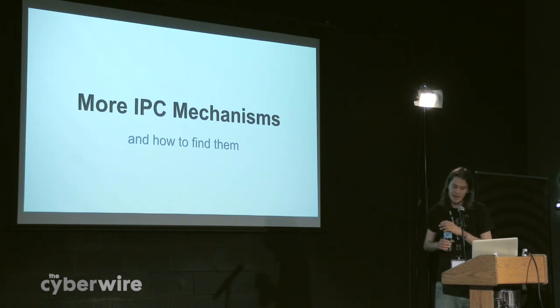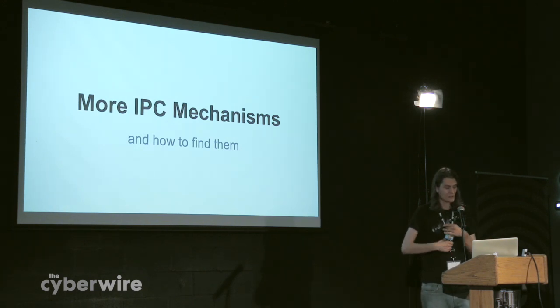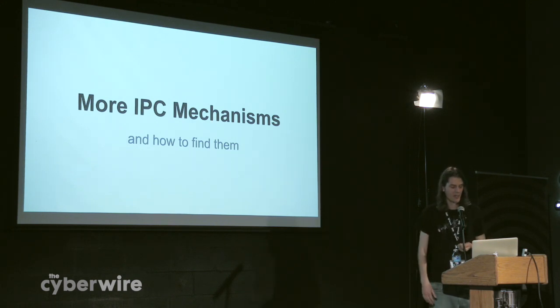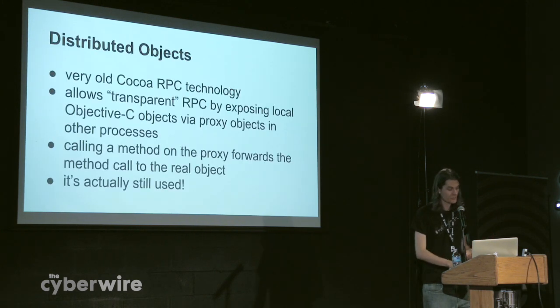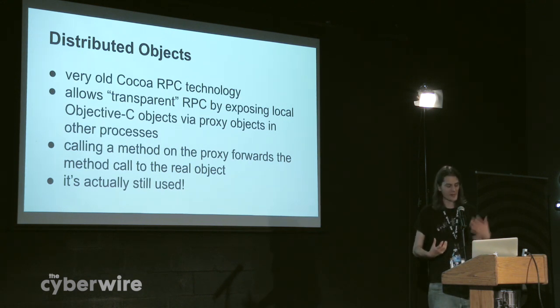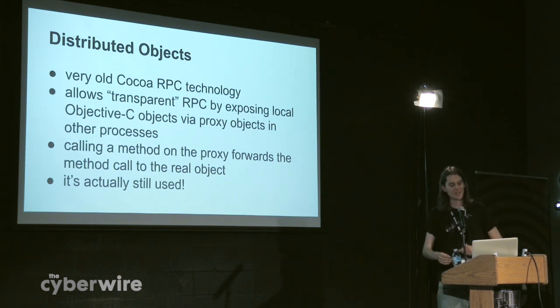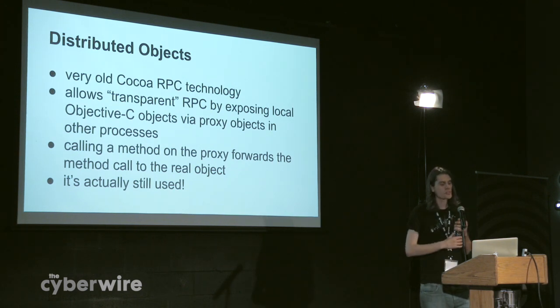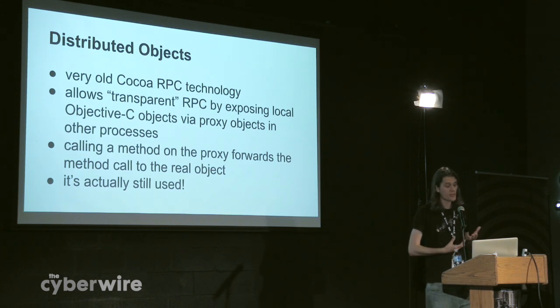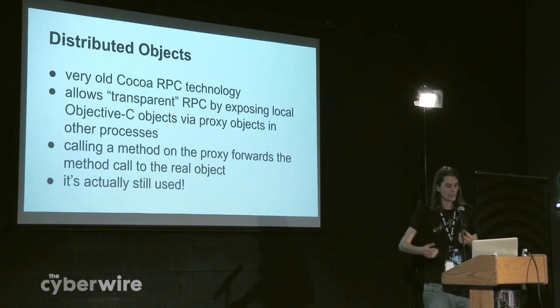Those are the handful of IPC mechanisms I've looked at in detail for this talk. There are a bunch more, so now I'm going to give a little flavor of what the other IPC mechanisms are and then pop a root shell. There's this thing called distributed objects — it's really, really old. I haven't found anyone out there who actually really knew what it was. It's from like NeXTSTEP days, so it's really ancient. And it allows transparent RPC by exposing local objects into another process context — you're supposed to be able to just take your existing Objective-C codebase and suddenly make it RPC-aware. It doesn't really work, which is why no one uses it. But some OSX system services do still use it.